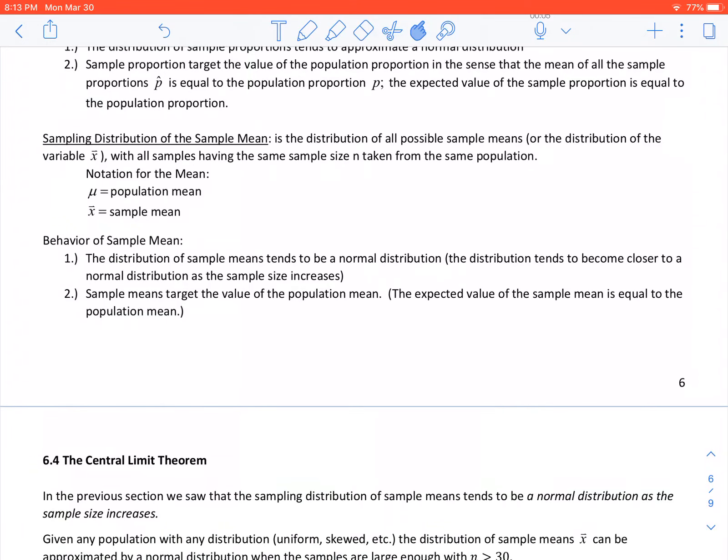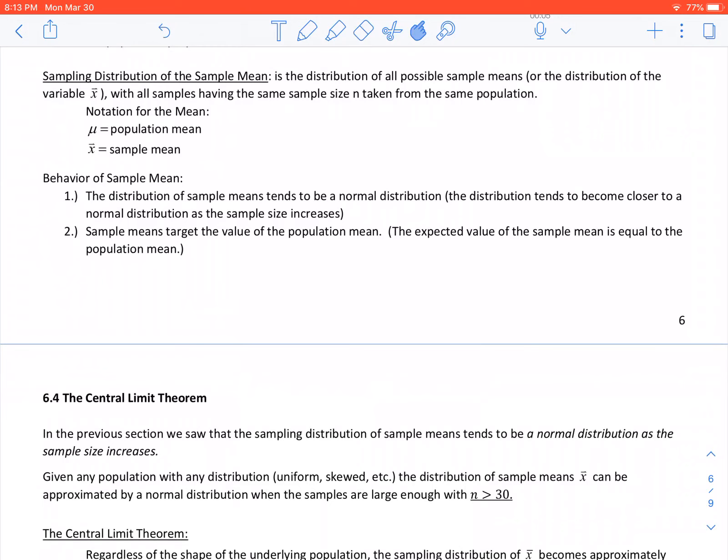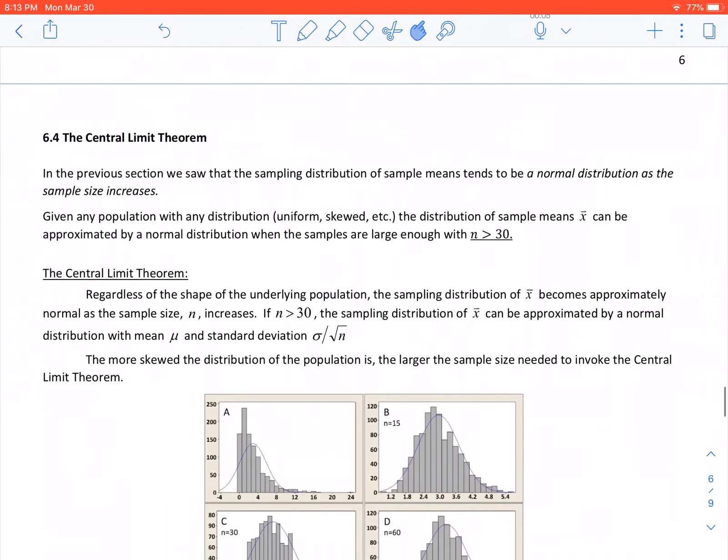Likewise, we have the sampling distribution of the sample mean, which is the distribution of all possible sample means with all samples having the same sample size taken from the same population. Again, the notation is what I want you to really get: mu is the population mean and x-bar is the sample mean, and we have seen that notation before. The rest of it I'll let you read through on your own.